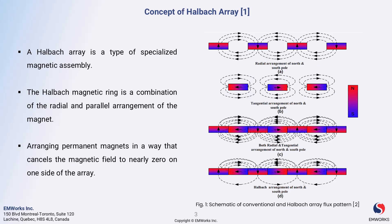This means we can focus the magnetic field exactly where we need it, improving the overall efficiency of applications like electric motors and magnetic levitation systems. That's a brief overview of halbach arrays. Next, we'll look at some practical applications of these innovative designs.